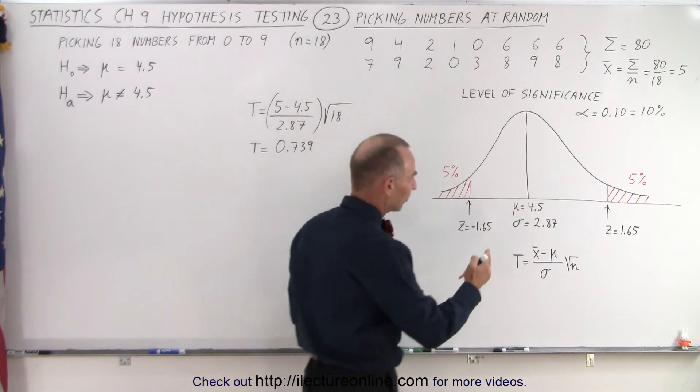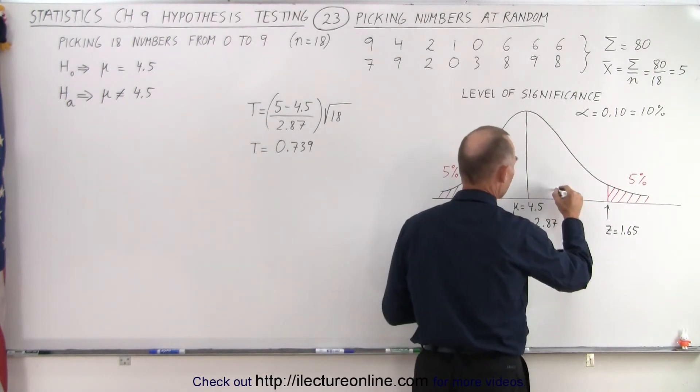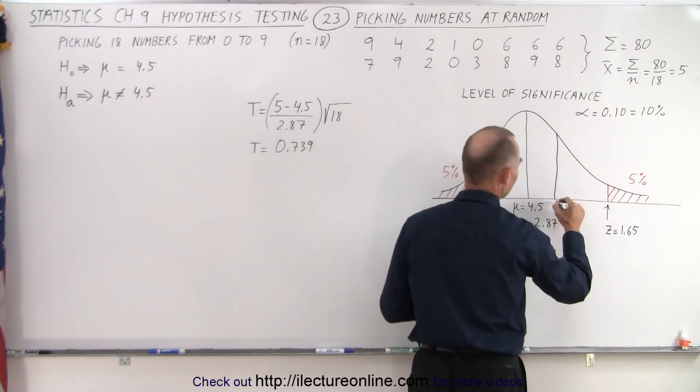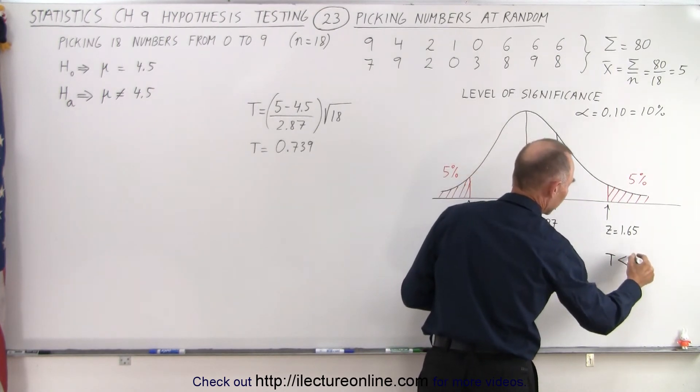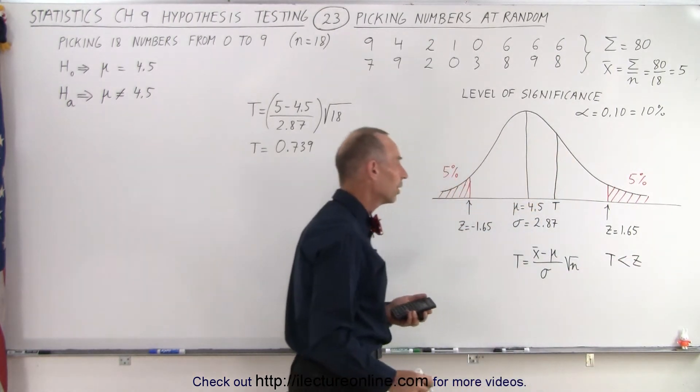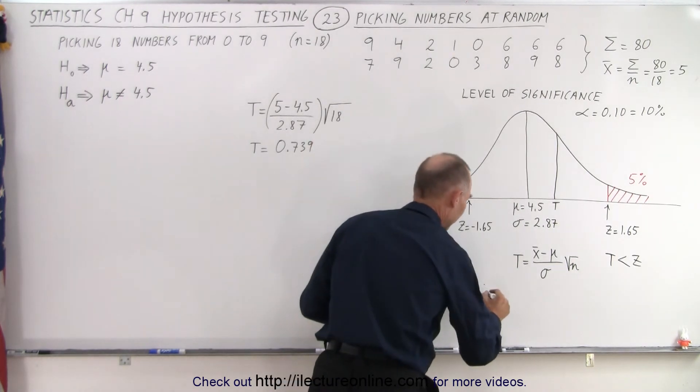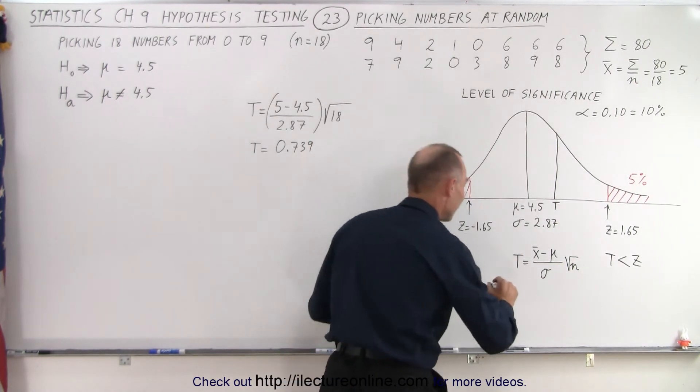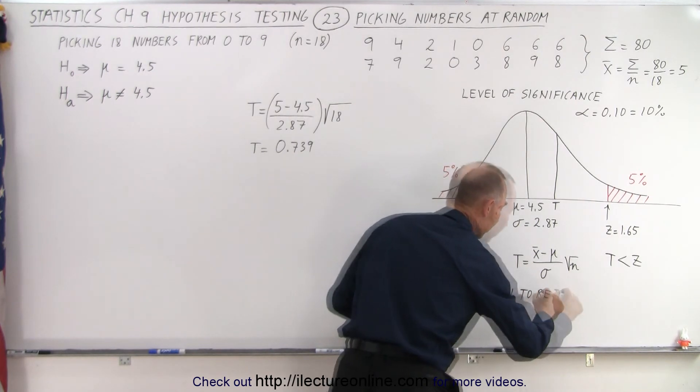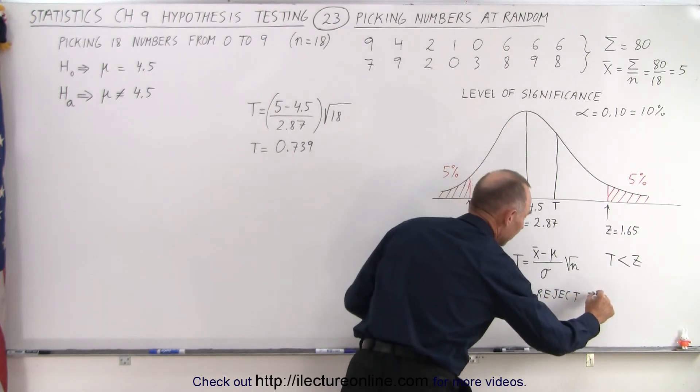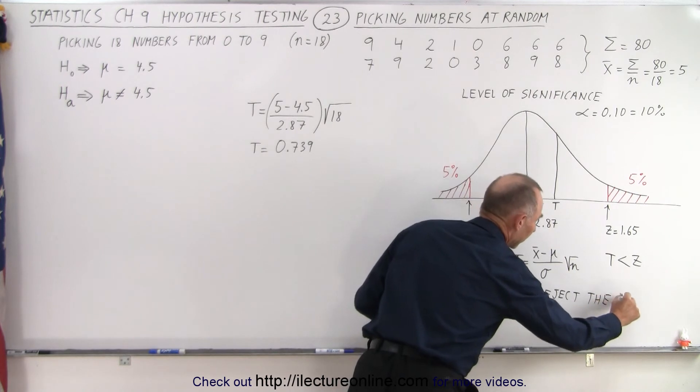And notice that puts that somewhere about here. There's the test-statistic. Notice that it's far smaller than the z-score, and therefore, we can say that we're going to fail to reject the null hypothesis.